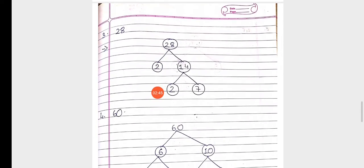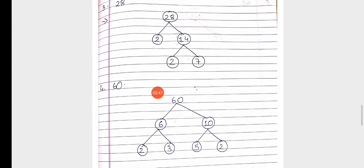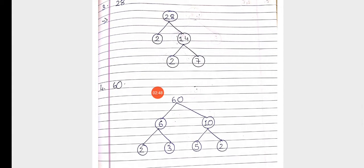In question 3, we have to make a factor tree of 28. So 2 — 14s are 28. Then 2 — 7s are 14. Again, we end up with 2 and 7, which are numbers that only come in one table.